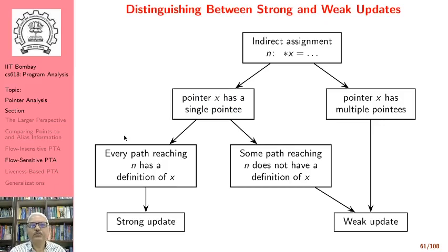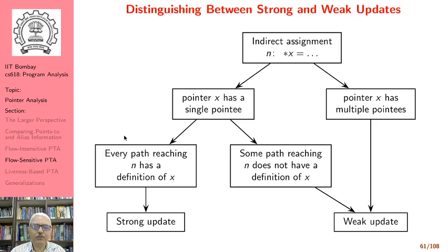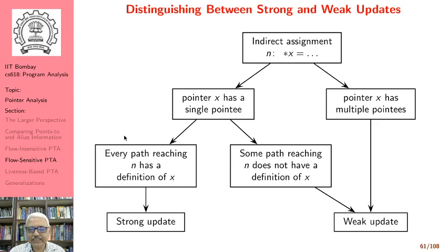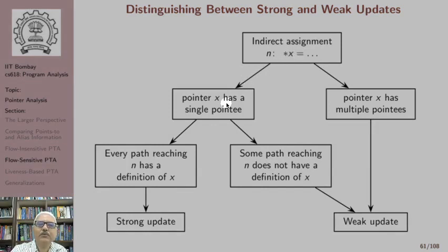If we do not use must and may points-to information in each other, we will have to be very conservative: in may points-to analysis we would be unable to kill anything and cannot perform strong updates at all, while in must points-to analysis we would end up killing every time even when unnecessary. So our focus is on may points-to analysis and we want to find a way of discovering must points-to information from may points-to information, specifically how to distinguish between strong and weak updates in may points-to analysis.